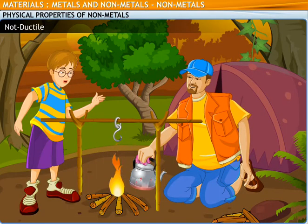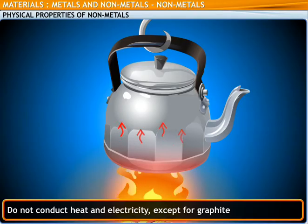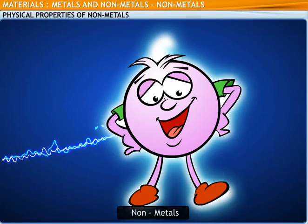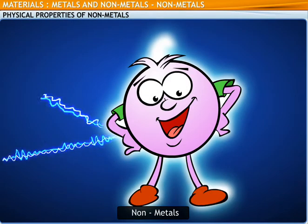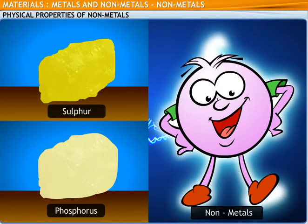Why are we using a cloth to remove it from the fire? This kettle is made of metal, which conducts heat very well. That's why the handle of the kettle is too hot to touch. Unlike metals, non-metals are not good conductors of heat. For example, sulfur and phosphorus do not conduct heat.